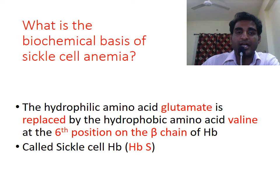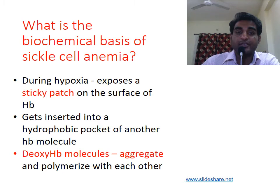In sickle cell disease, the hydrophilic amino acid glutamate is replaced by the hydrophobic amino acid valine at the sixth position of the beta chain on hemoglobin. This produces an abnormal hemoglobin called sickle cell hemoglobin, or HbS.